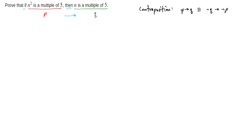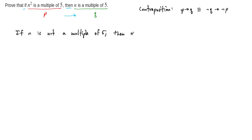So what we're going to prove is not Q implies not P. Before we write the actual proof, let's start by writing out the statement in words. Not Q implies not P says: if n is not a multiple of 5, then n squared should also not be a multiple of 5. This is the statement we're actually going to prove, and by this logical equivalence we will have also proved the given statement.